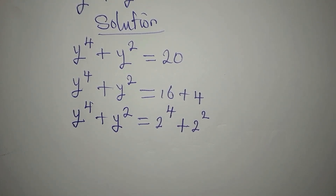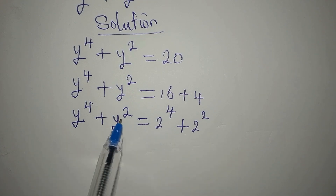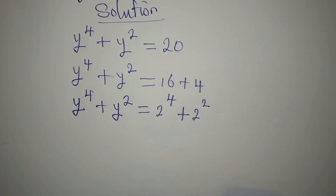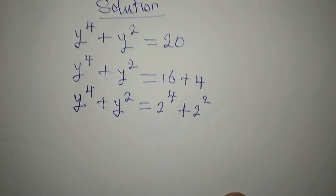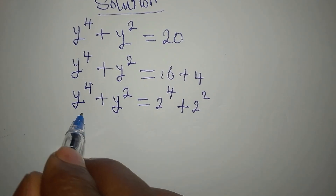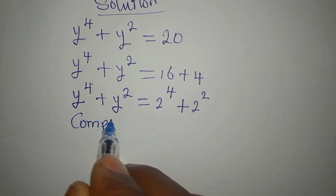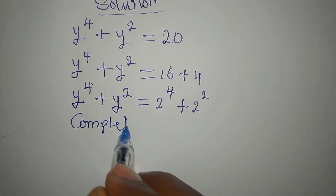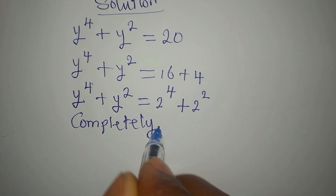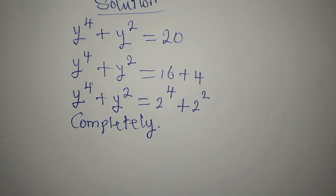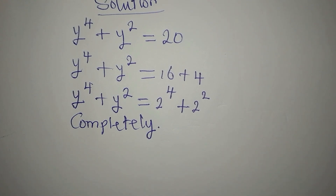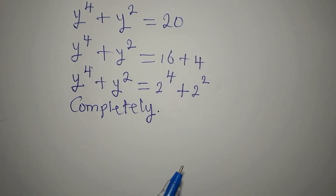But if you conclude that y is 2, you will have just one solution, and the question says we should solve it completely. So y equals 2 cannot be the only solution. Let's regroup.